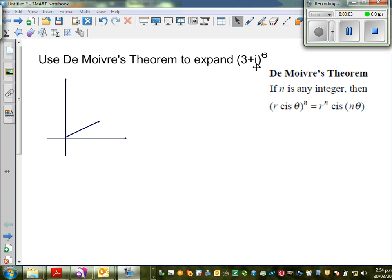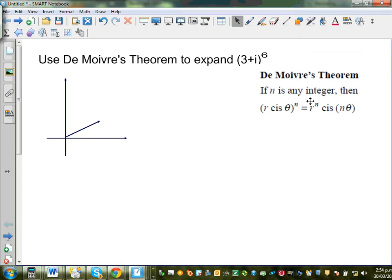Use De Moivre's Theorem to expand 3 plus i to the power 6. Now De Moivre's Theorem states that if n is an integer, then r cis theta to the power n is r to the power n cis n theta. So De Moivre's Theorem can be used only when you can write a complex number in polar form.